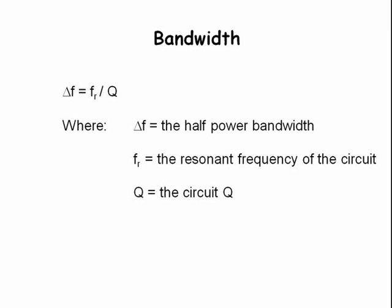Δf equals f sub r divided by Q. That is, the half power bandwidth, Δf, equals the resonant frequency of the circuit, which is f sub r, divided by Q, the quality factor.